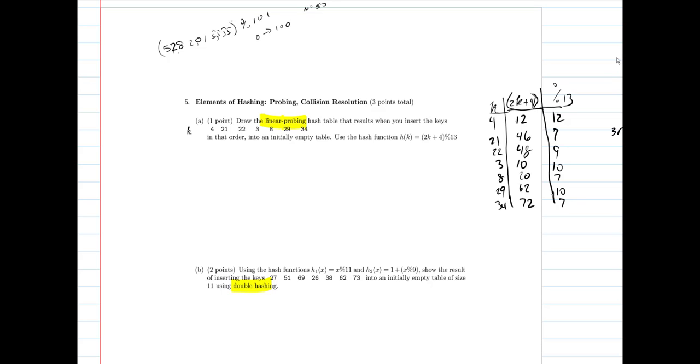So this is my hash function. My 13 corresponds to my array size or my table size. It's going to be an array of size 13, which means I'll have values for array indices going from 0 to 12.